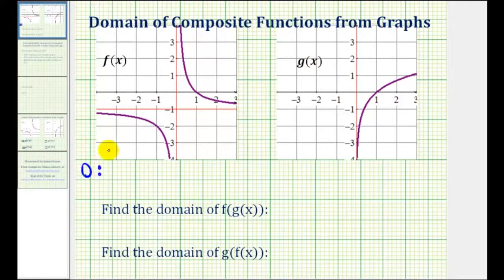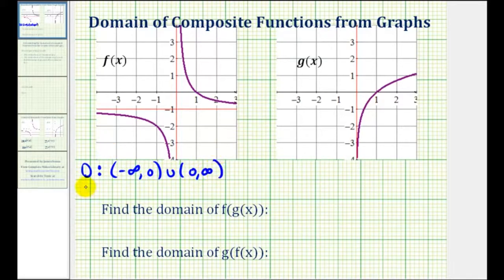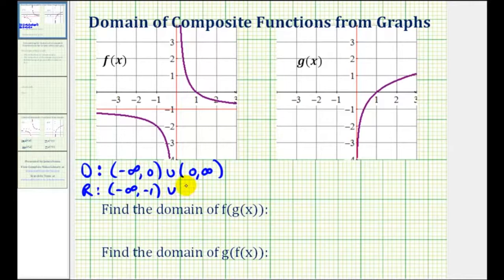Notice that we have a vertical asymptote here at x equals zero, which means the domain will not include zero for f of x. So we'll have the open interval from negative infinity to zero and the open interval from zero to infinity. And then for the range, notice how it will not include the y value of negative one. So we'll have the open interval from negative infinity to negative one and the open interval from negative one to infinity.